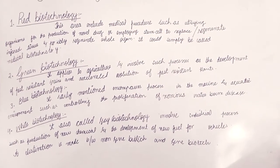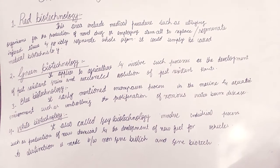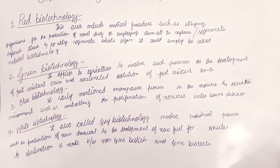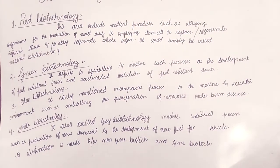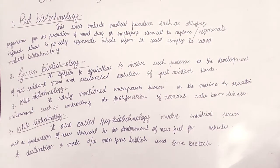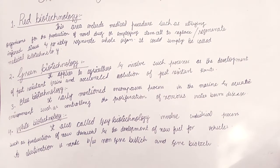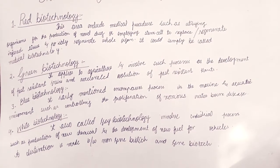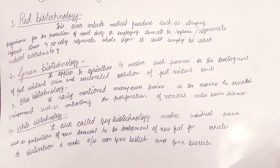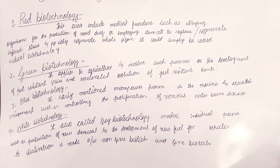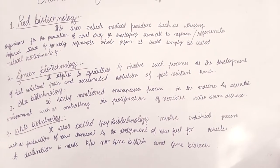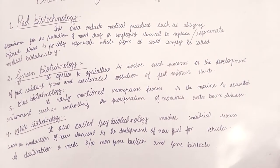The next one is green biotechnology. It applies to agriculture and all such processes as the development of pest-resistant grains and accelerated evolution of pest-resistant plants. As the color indicates, green biotechnology relates to agriculture.